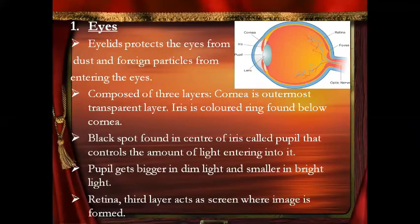You must have observed that whenever you go into bright light, your pupil gets smaller, while in dim light your pupil gets bigger to see things clearly. The innermost layer is called the retina, which acts as a screen where the images form. Inside the eye, there is a bundle of nerves called the optic nerves, which send messages to the brain.